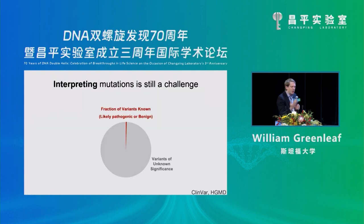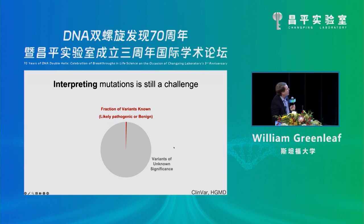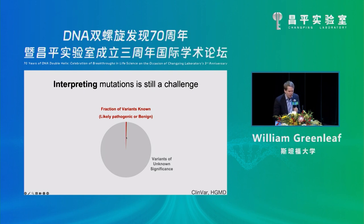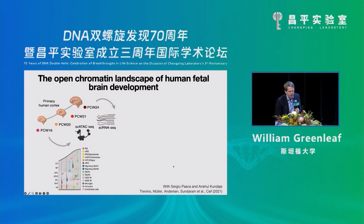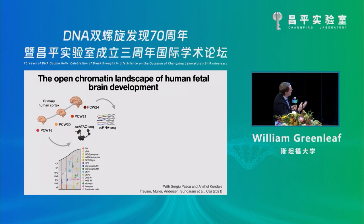How can we use this data to interpret mutations? Quite often, if you see a de novo mutation in a gene coding region, you can start to interpret it. But if it's in a non-coding region, it's very hard — and actually the vast majority of mutations occur in these non-coding regions. So we wanted to try and understand the effect of non-coding mutations on developmental processes.